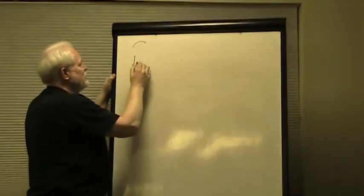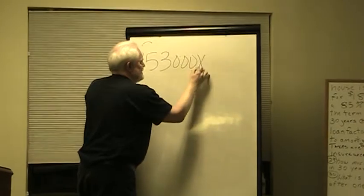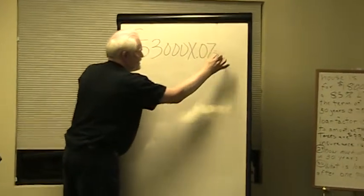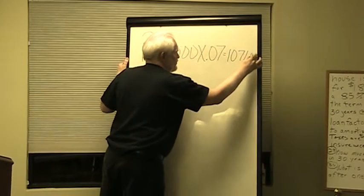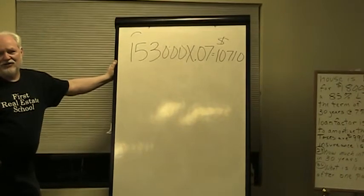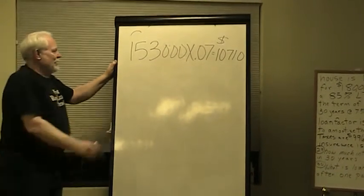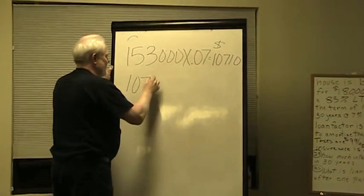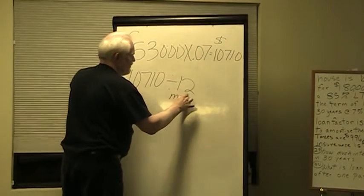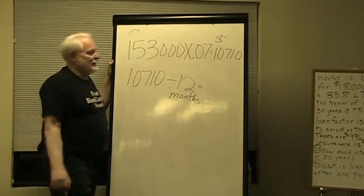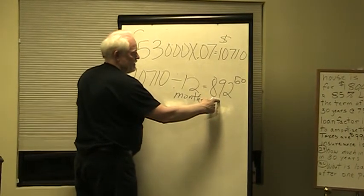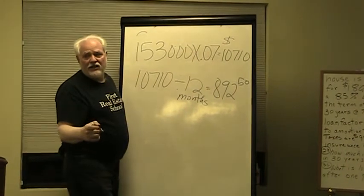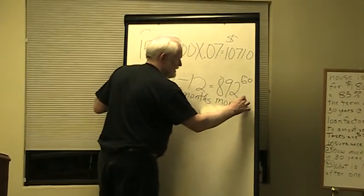We're going to multiply the principal, which is $153,000, times the interest rate, 0.07. What's the calculator say? $10,710 per year. Step two, we don't care about per year. We want to know about the first month. So we're going to divide it by 12 months to get $892.50. What's the name of that money? That is the monthly interest.